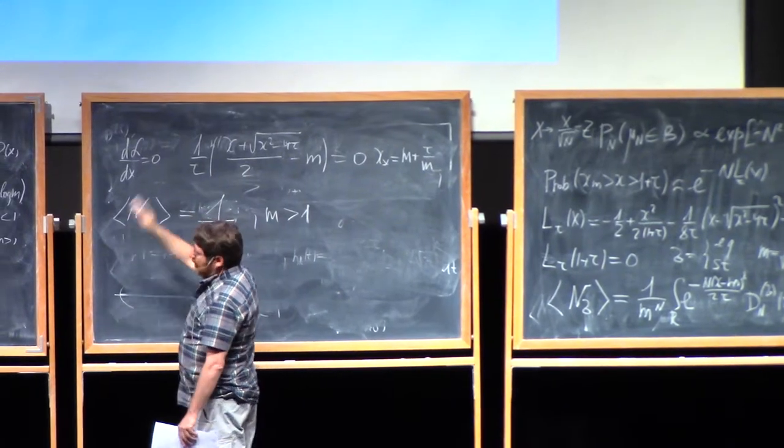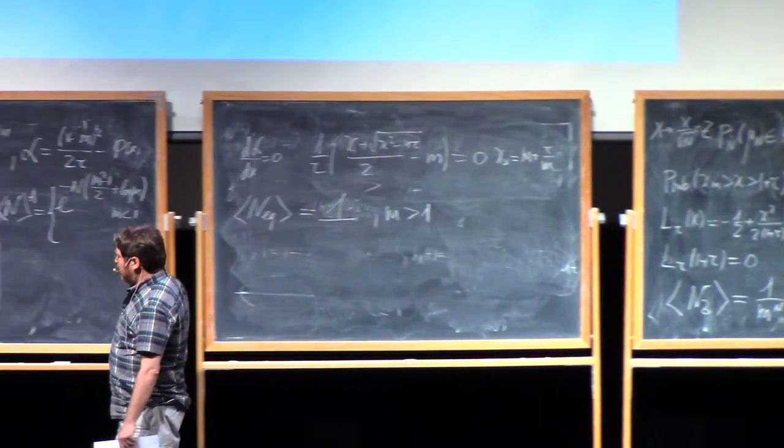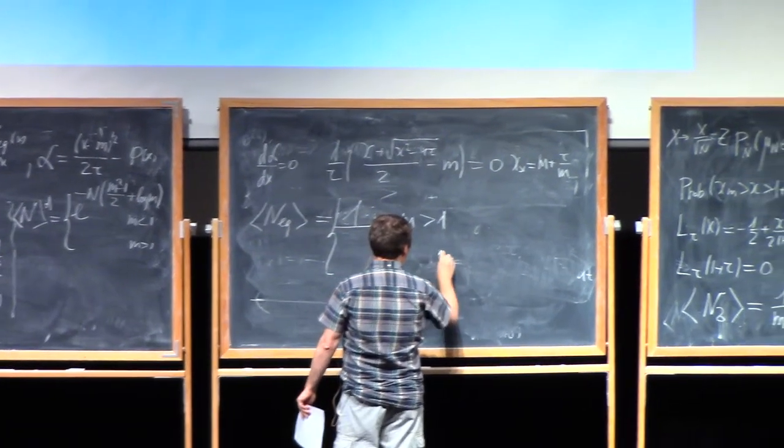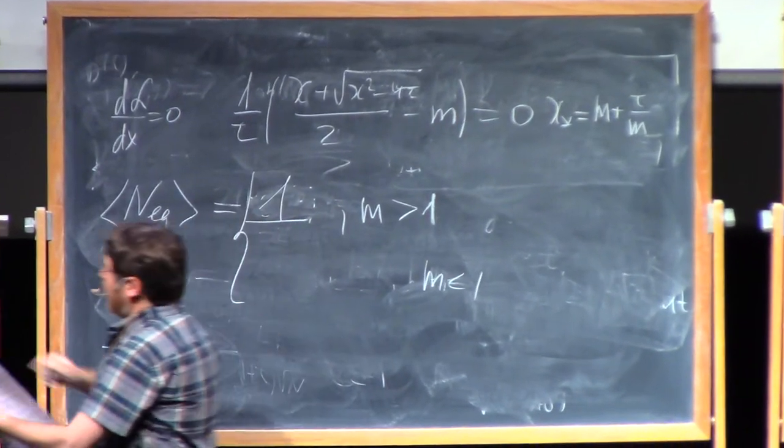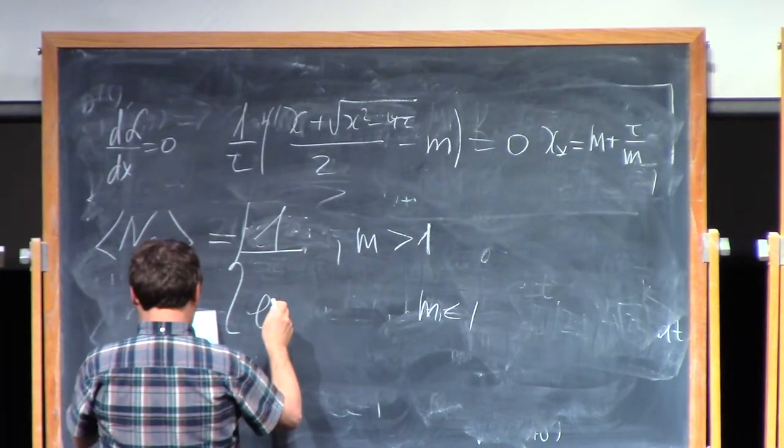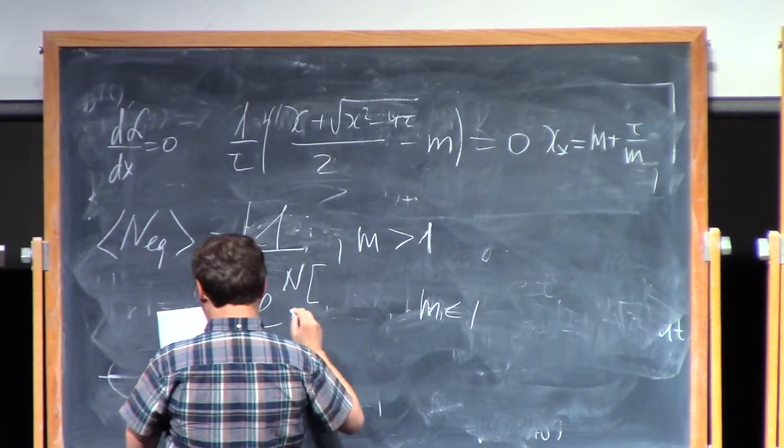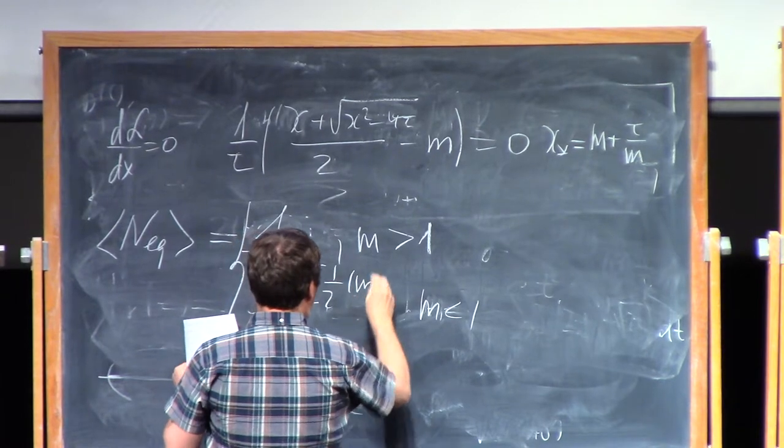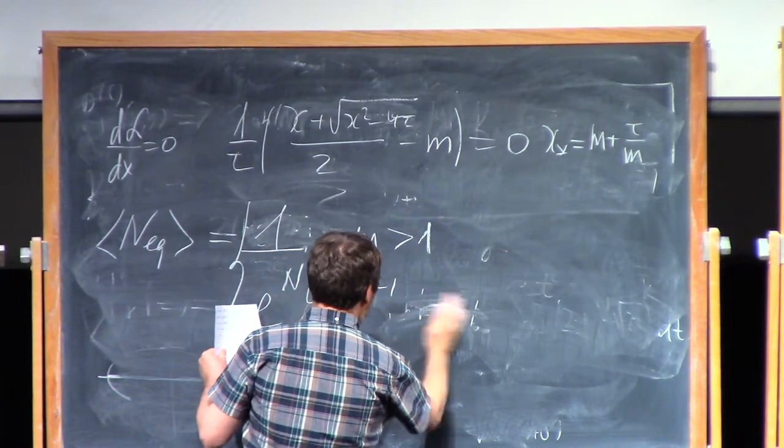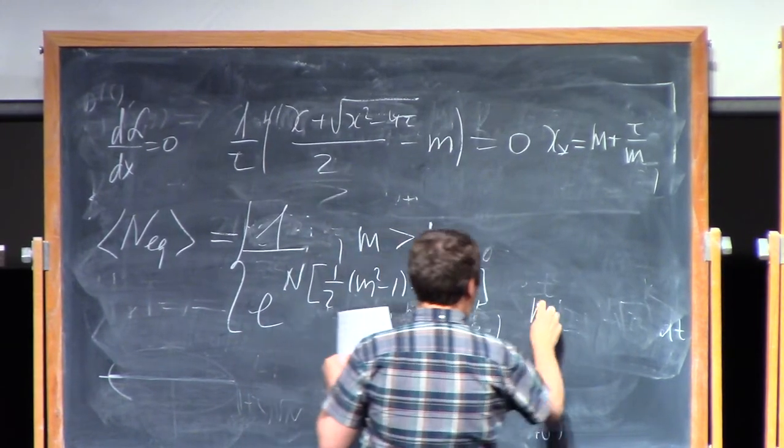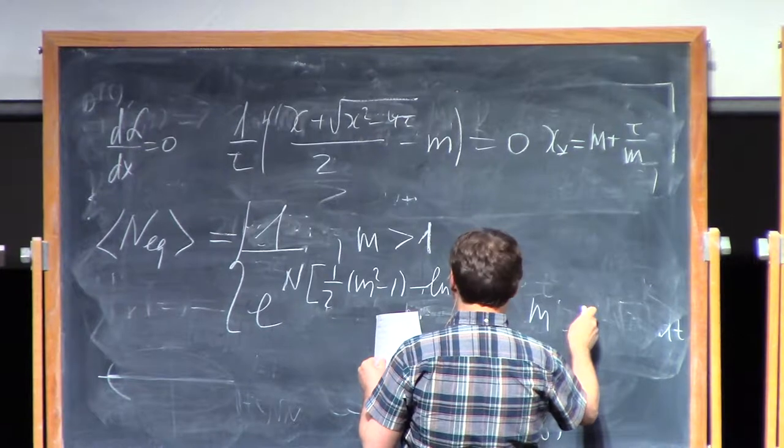So this is really the expression for m larger than 1. Now, comparing contribution from various intervals for m smaller than 1, basically this term, this contribution dominates. So one gets exponential, with exponential, not discussing pre-exponential terms, just exponential of n times one-half of m squared minus 1, minus log m, for m smaller than 1.